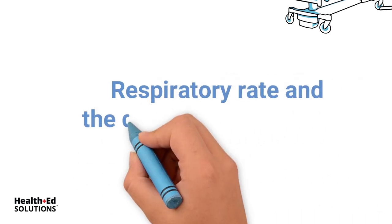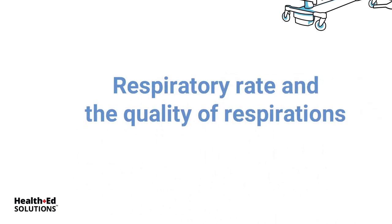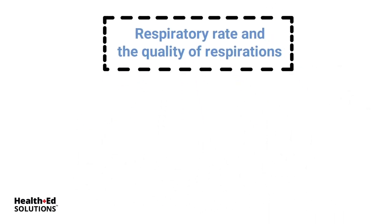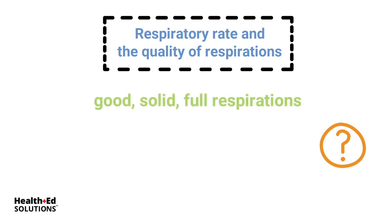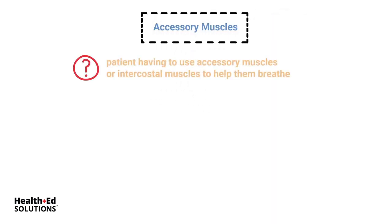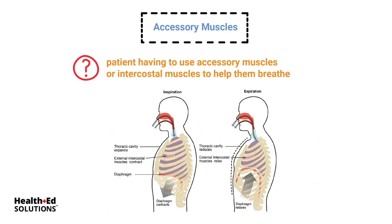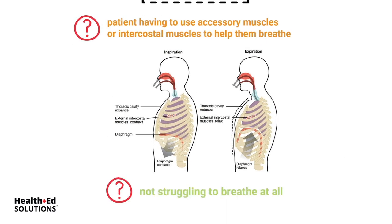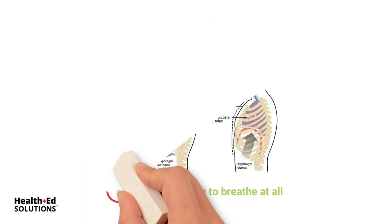You're counting respiratory rate and the quality of respirations. Are they good, solid, full respirations, or are they really shallow? Are they breathing too fast or too slow? Is your patient really having to use those accessory muscles and those intercostal muscles to help them breathe, or are they not struggling to breathe at all?